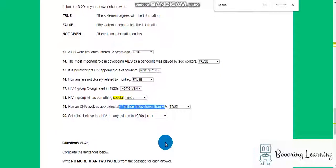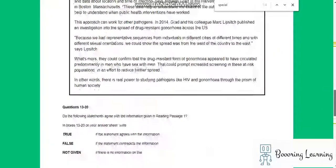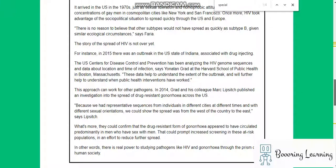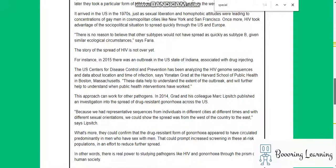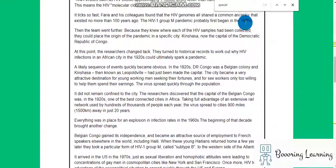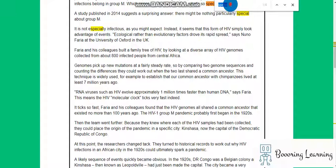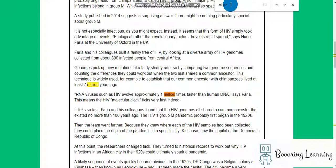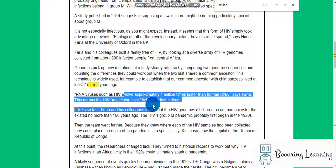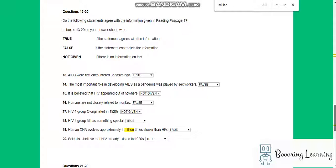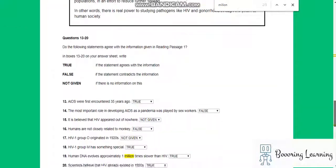Human DNA evolves approximately one million times slower than HIV. One million must be our keyword. Do you see any one million? RNA viruses such as HIV evolve approximately one million times faster than human DNA. Yeah, human DNA, right? True.